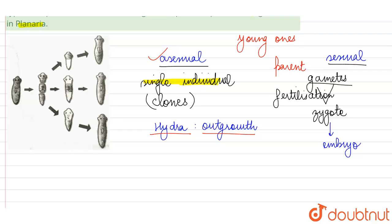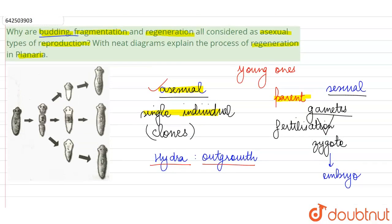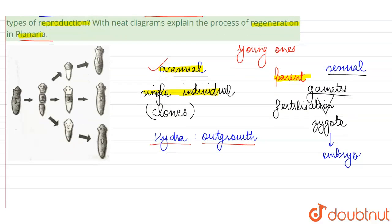Similarly, fragmentation can be seen in hydra: if the body is divided into two parts, both pieces grow into new individuals. Again, there are no gametes, no fertilization, and no male and female parents involved, so it is asexual. Regeneration is also a process under the asexual mode of reproduction, as seen in planaria.